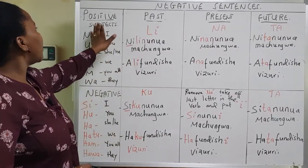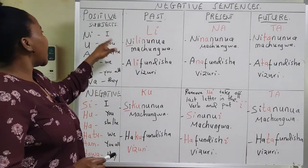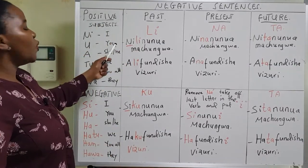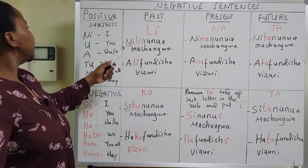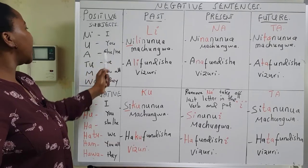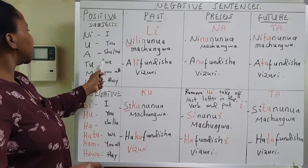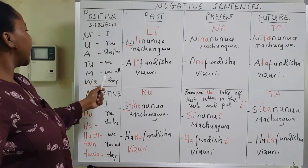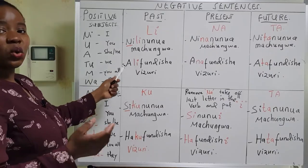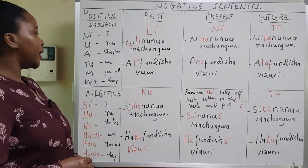For the positive subjects: ni means I, u means you, a means she or he, tu means we, m means you all, and wa means they.